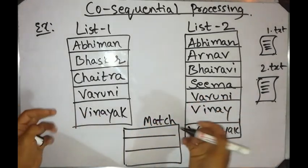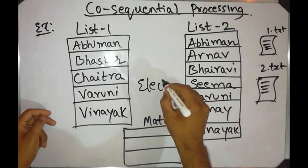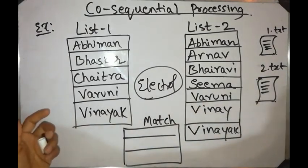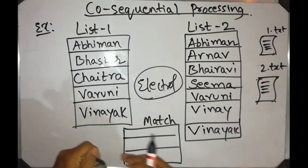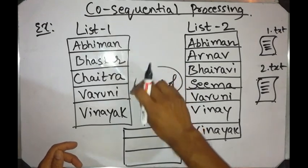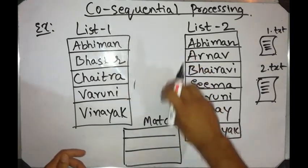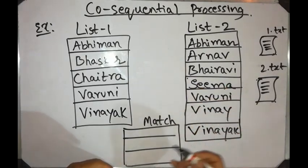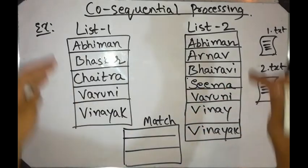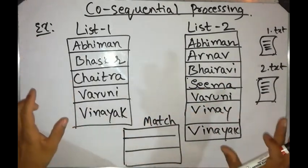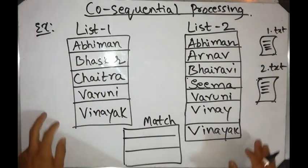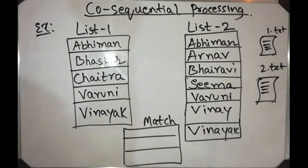Another example is an electoral list where no single person should be enrolled in two different lists of two different areas. We need to come up with a match list and then delete all those names from the particular lists to make sure they appear in only a single list. There are many such applications of co-sequential processing.